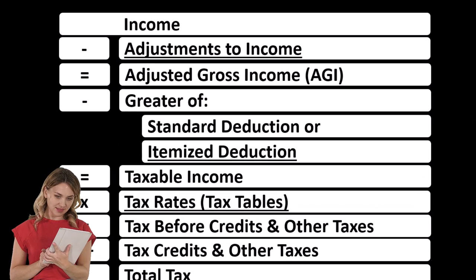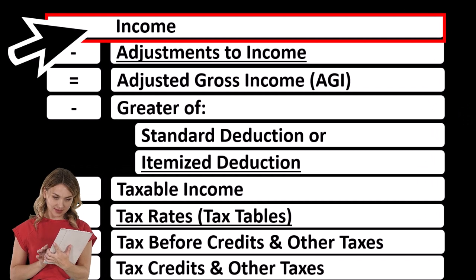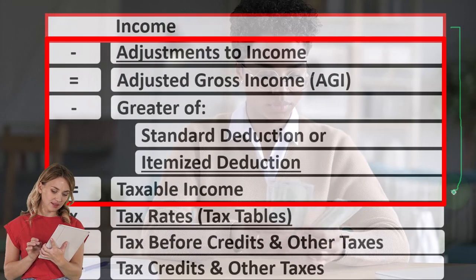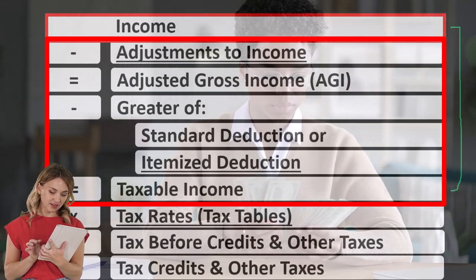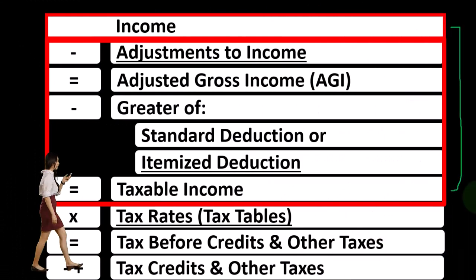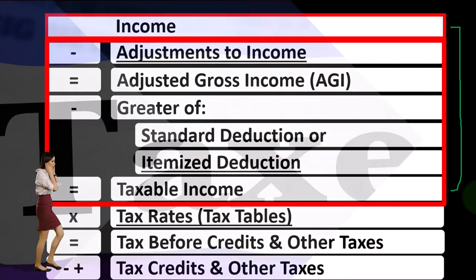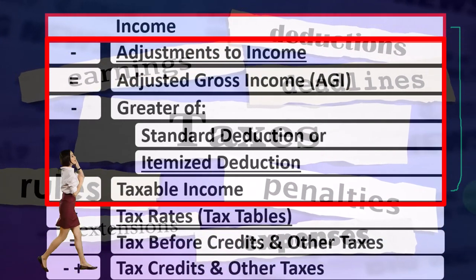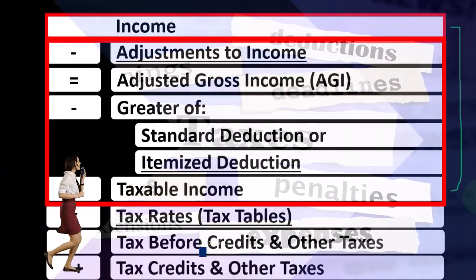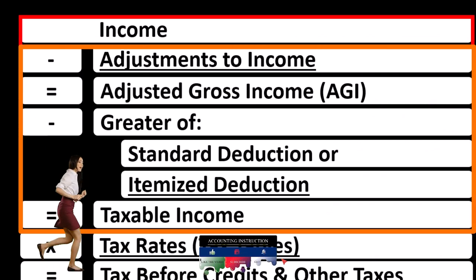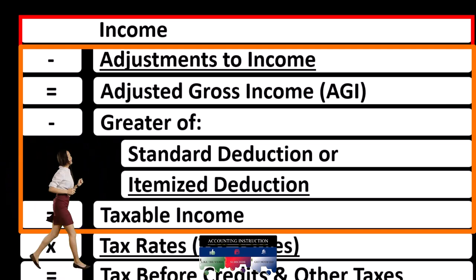Looking at our income tax formula, we are once again focused on line one, that being income. The first half of the income tax equation is essentially a strange income statement where income minus the equivalent of expenses — those being the deductions — gets us to the equivalent of net income, in this case taxable income. Our objective is the opposite of the normal objective: we want taxable income to be as low as possible. When focused on the income line, the question is: is this thing income, and if it is, do I have to include it as taxable income, or is it exempt?